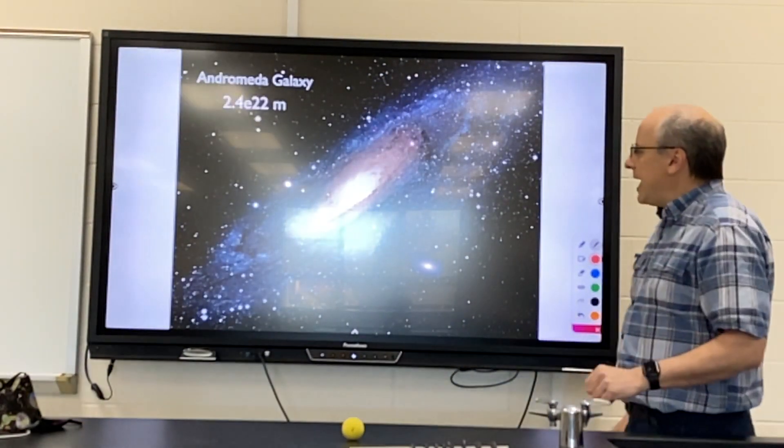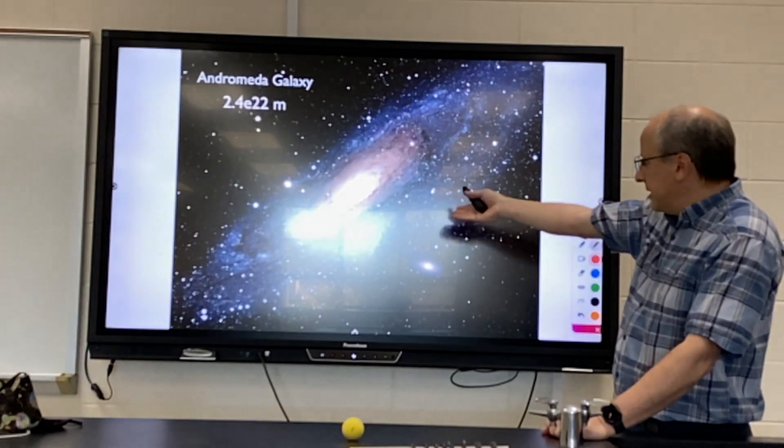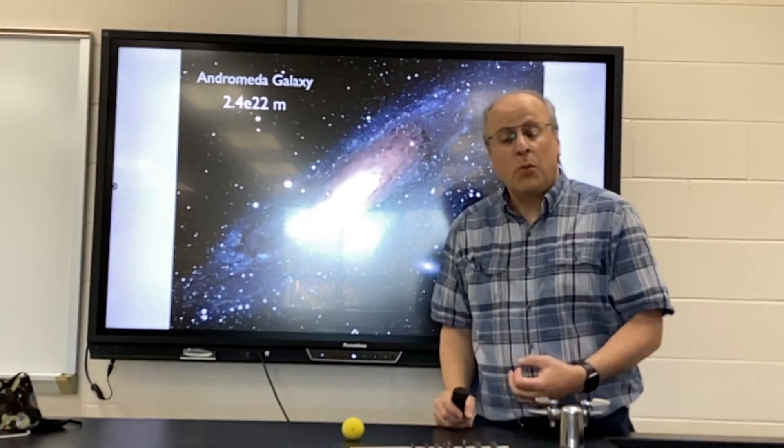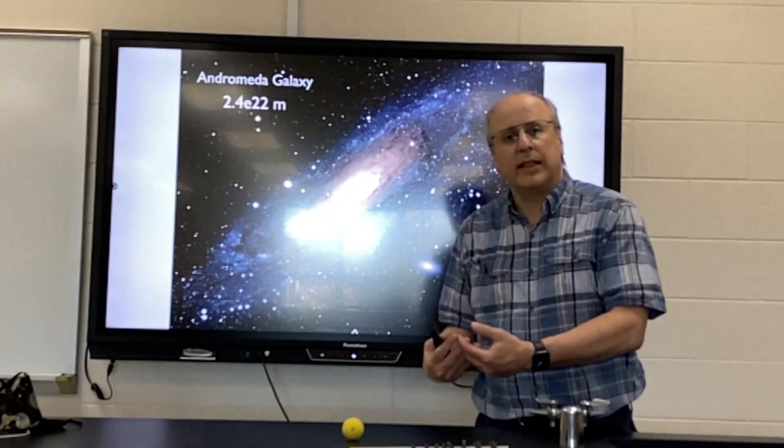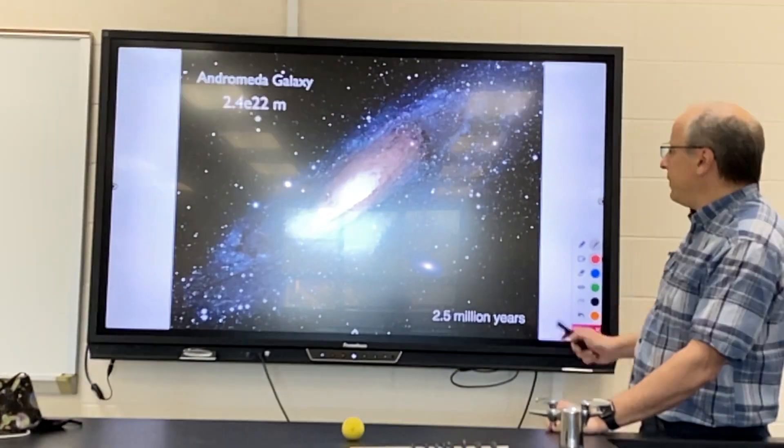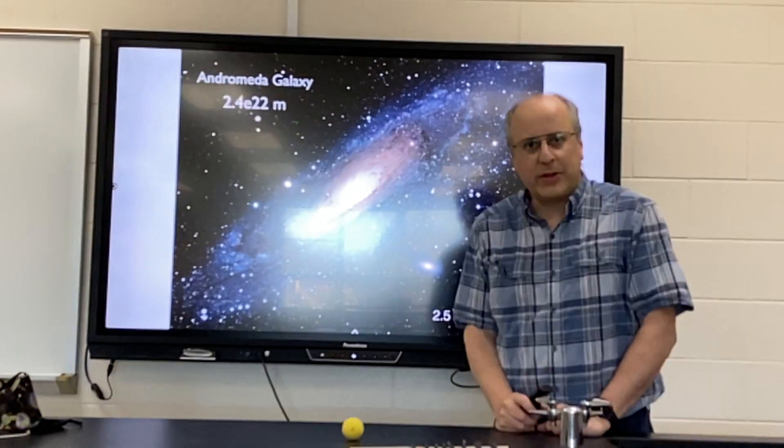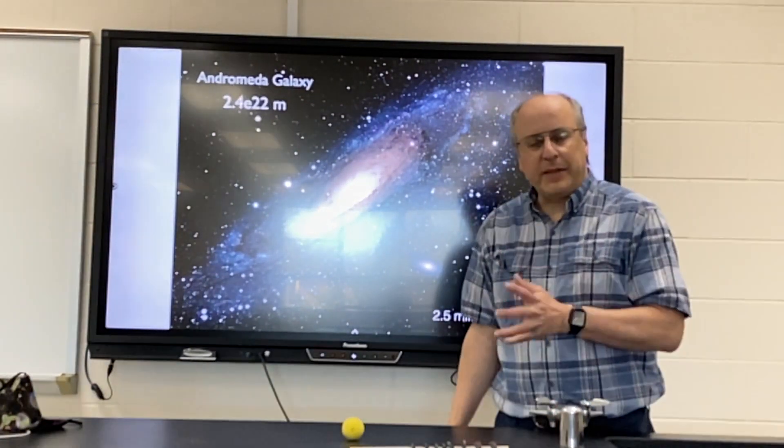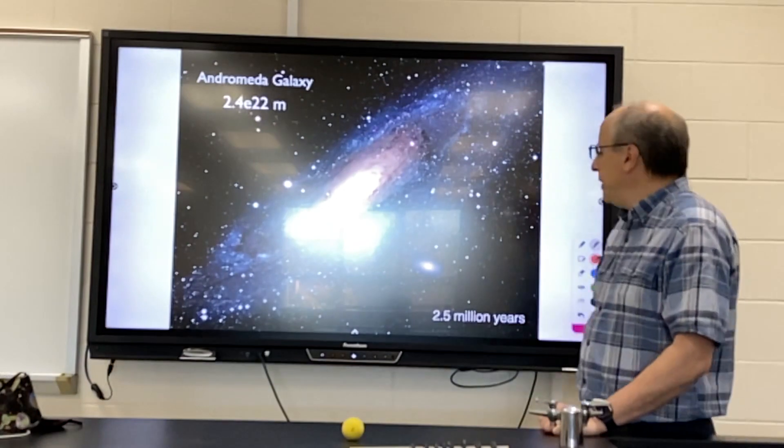The Andromeda galaxy is special because it's the closest galaxy to our own. When we view it, and this is an actual picture with the telescope, again we are looking back in time. We are not seeing it as it looks today. We are seeing it as it looked when the light left. The light that is reaching us today left the Andromeda galaxy 2.5 million years ago. It took 2.5 million years to travel from the galaxy to the Earth. You are literally seeing back in time 2.5 million years.